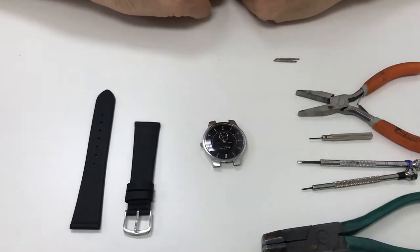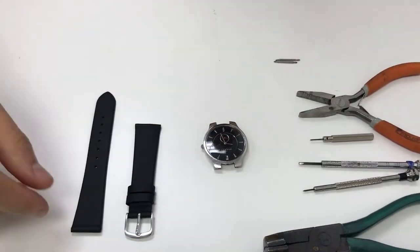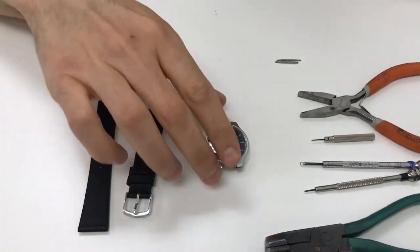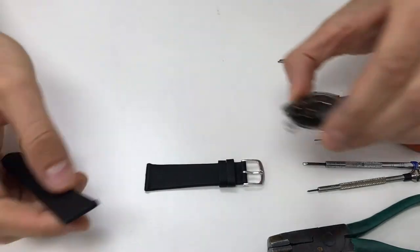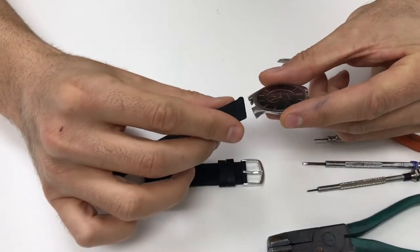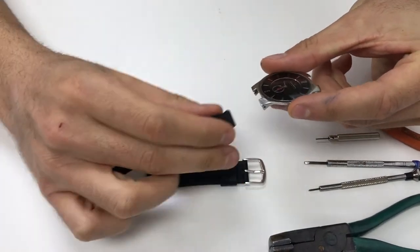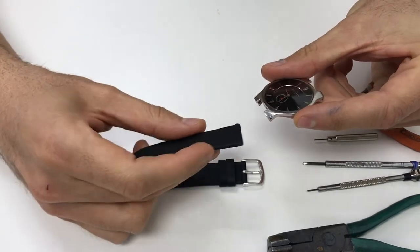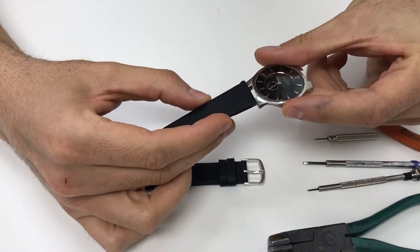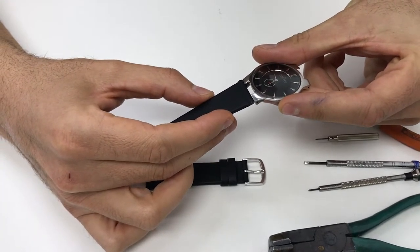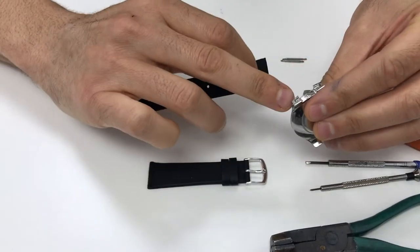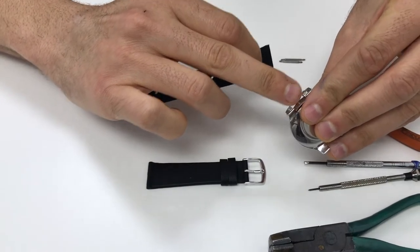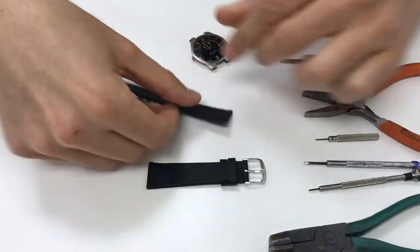So now we're going to begin with the customization of the strap here. I have the black leather. I chose a 20 millimeter because as you can see the watch case is 20 millimeter and if you align it next to the case with the strap you can see that it's flush. Now I'm going to need to cut the edges about one millimeter so that they can fit into this case here.